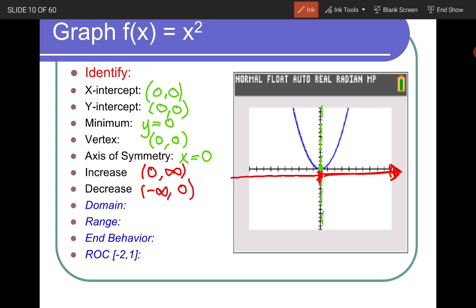Now domain, all possible X values, right? So we can just write negative infinity to infinity. Our range, our lowest Y value is at zero. Now does it include zero? It does. So it would be bracket zero and it goes all the way up to positive infinity.